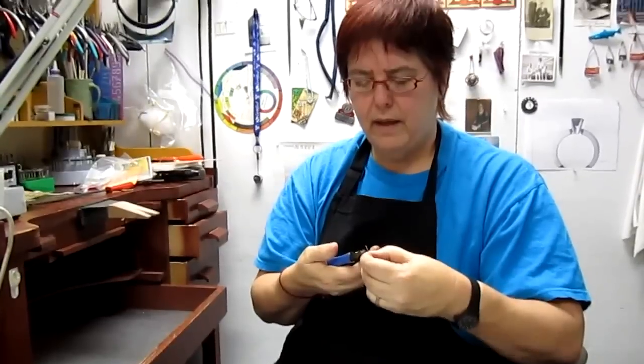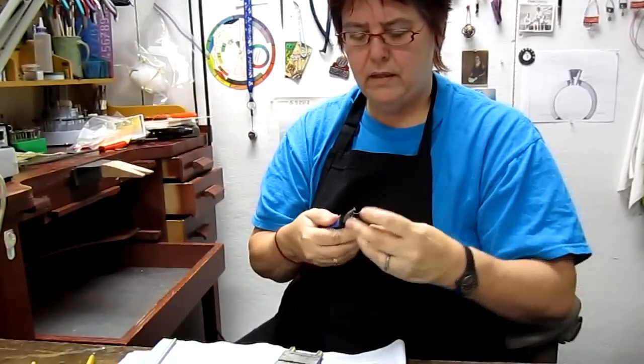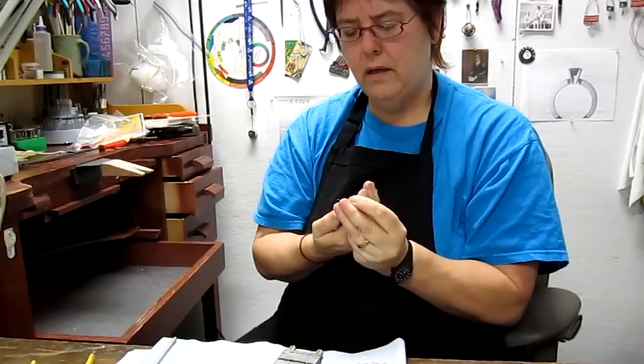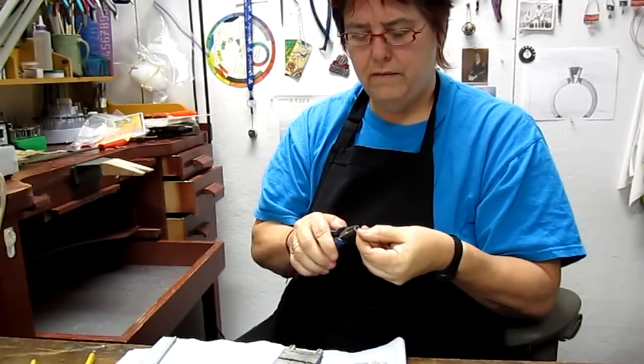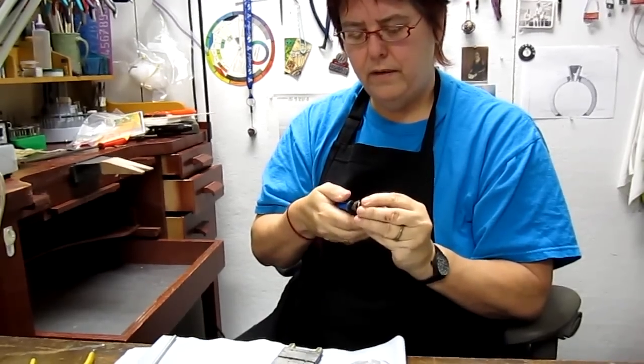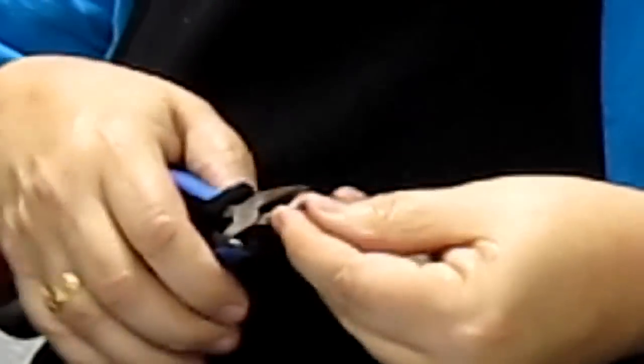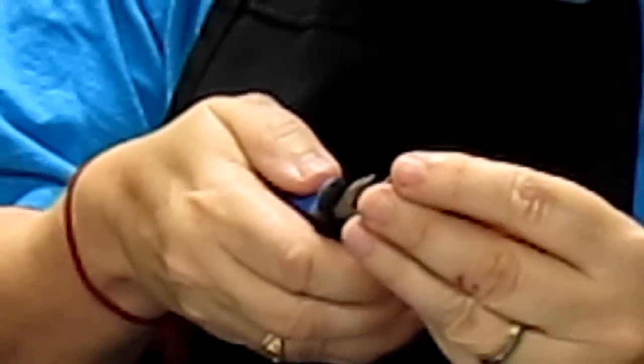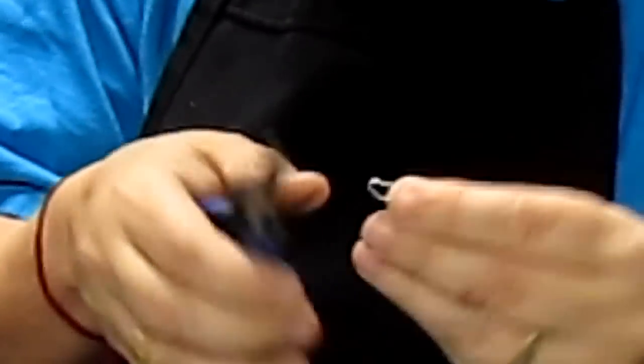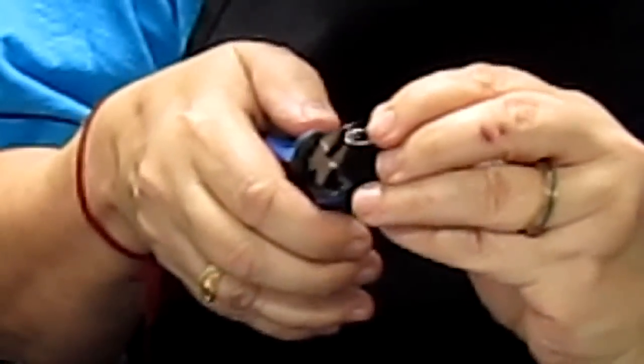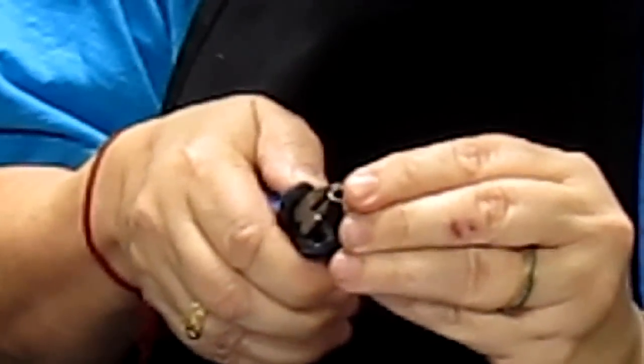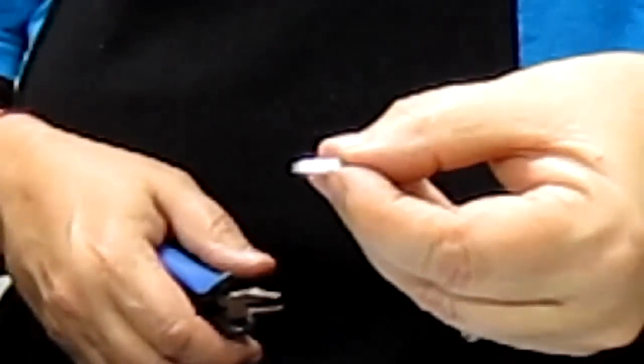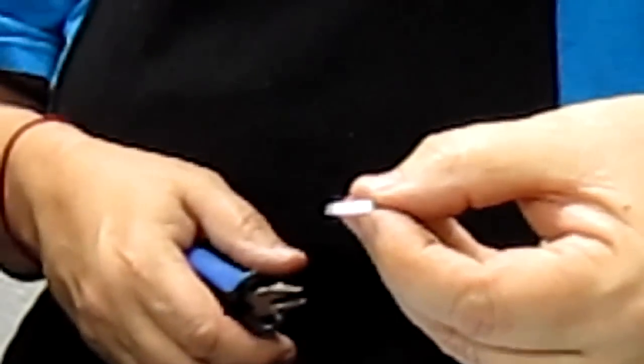And now I'm going to file nice and flat. Now I can easily take my half round pliers and just start to bend this and form this until the two ends come together nice and flat. And I'm ready for soldering. And now we have this nice and flat. And you can see that there's no light coming through the end. That's going to make a very solid soldering seam.